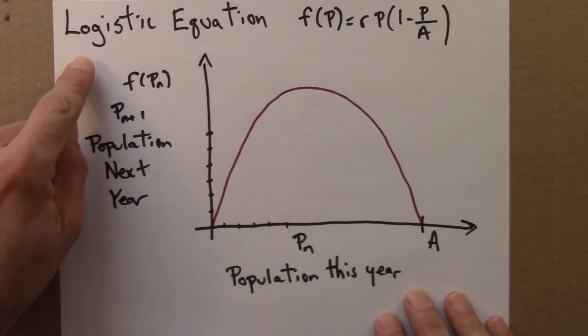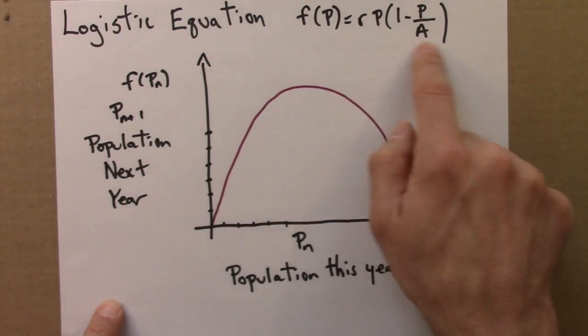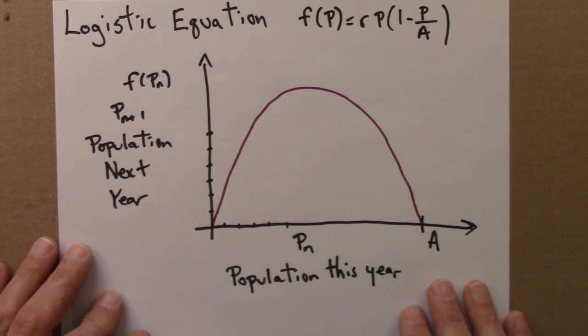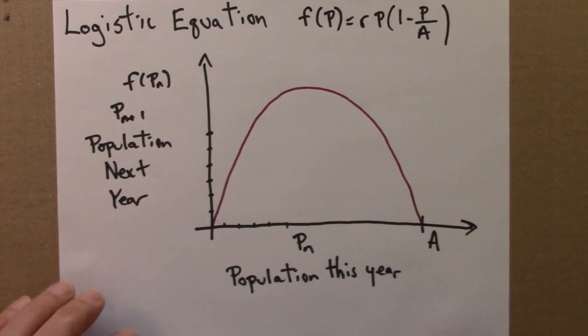So in any event, the logistic equation, here it is. It looks like this. We'll see graphs of this again. It is a simple model designed to capture population growth where there's some limiting factor to the population. So it can't grow forever. There's some maximum value that if it ever reaches, you suddenly lose all the population.